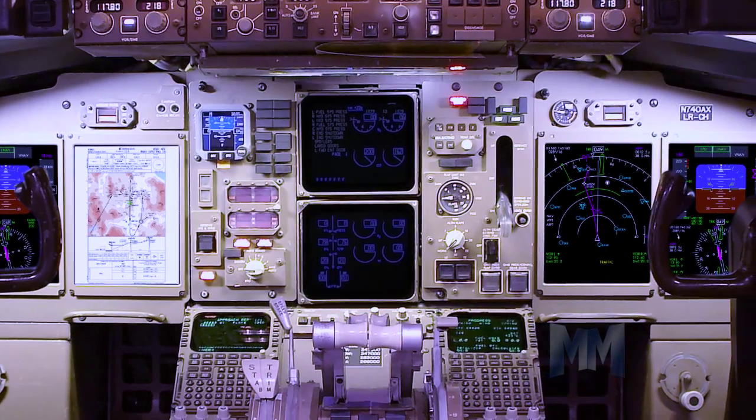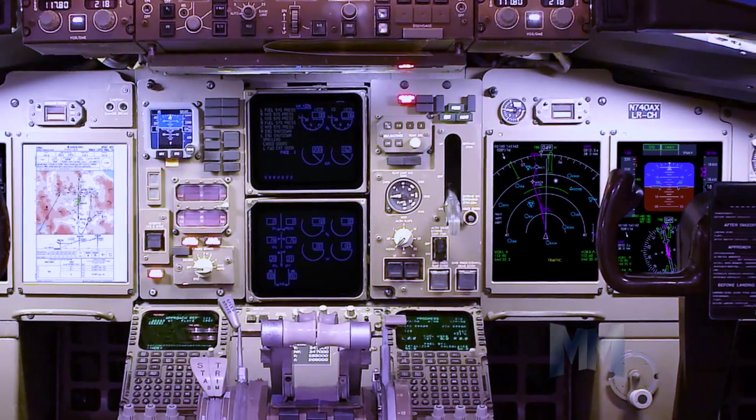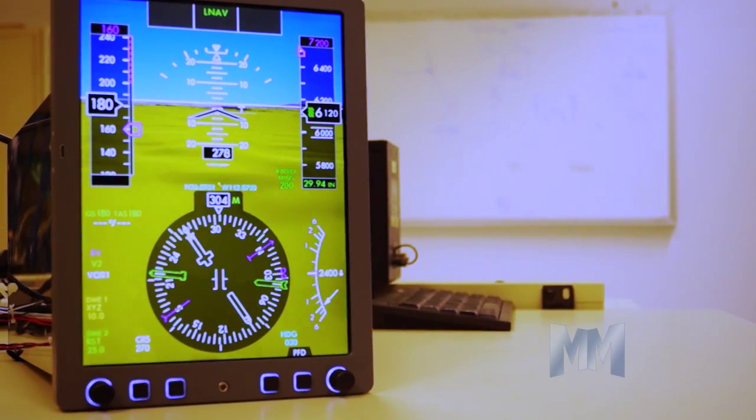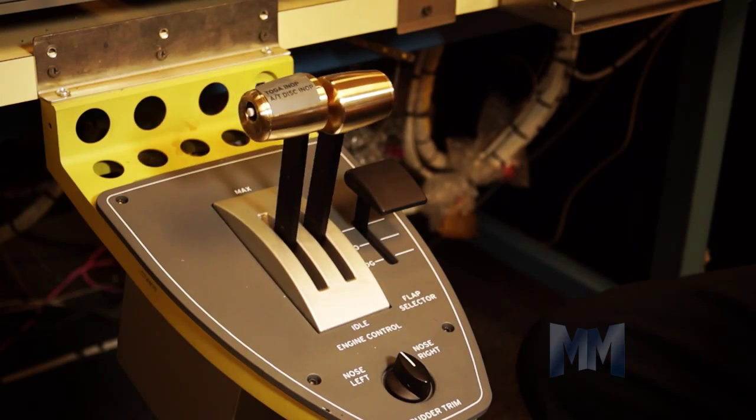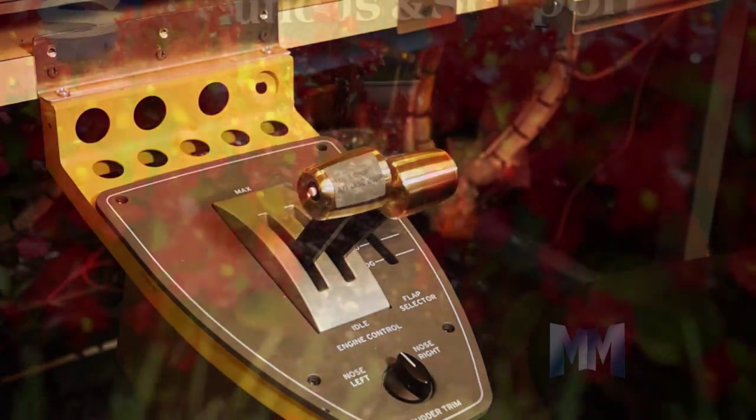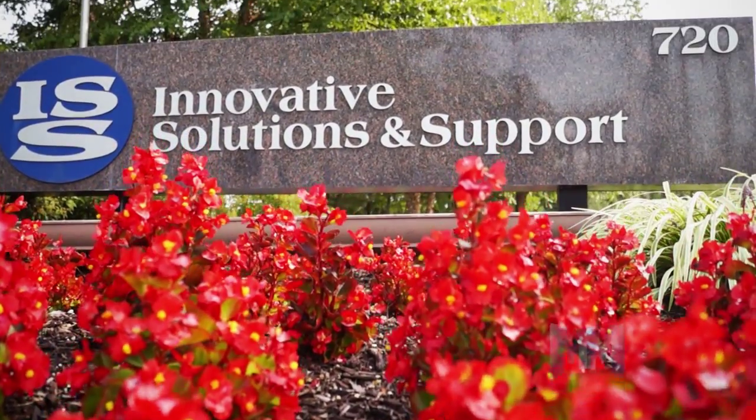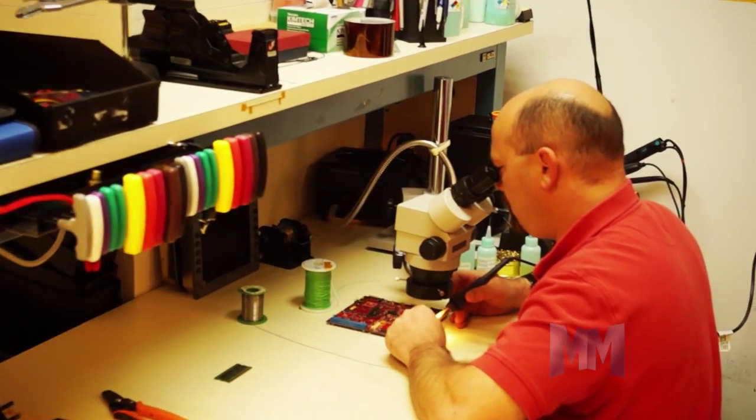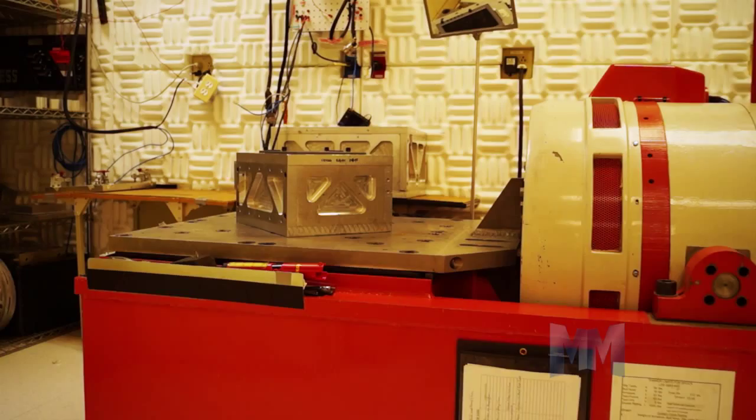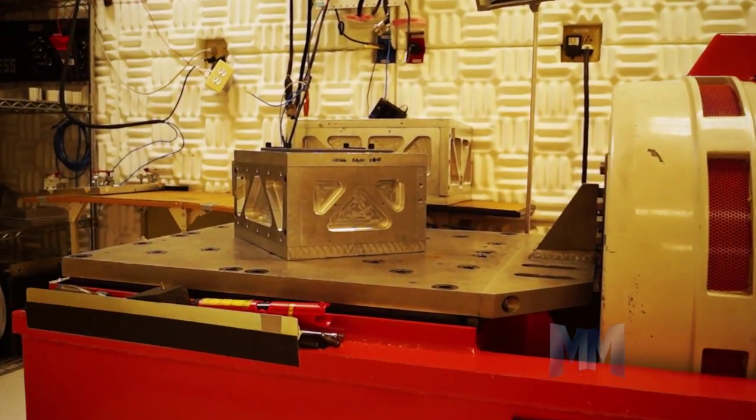Since 1988, IS&S has been committed to developing and supplying avionics which meet customer requirements while exceeding their expectations. Based in Exton, Pennsylvania, IS&S is an integrator of communication, navigation, and collision avoidance equipment to meet next-gen airspace requirements.